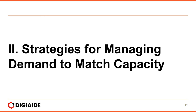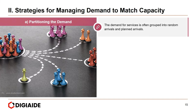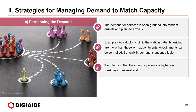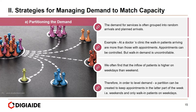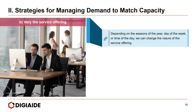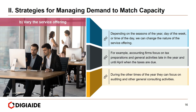Now, strategies for managing demand to match capacity. First, partition the demand: demand for services is often grouped into random arrivals and planned arrivals. For example, at a doctor's clinic, walk-in patients are more numerous than appointment patients — appointments can be controlled but walk-in demand is uncontrollable. Since patient inflow is higher on weekdays, a partition can be created to keep appointments in the latter part of the week and only walk-in patients on weekdays. Second, vary the service offering: depending on the season, day of the week, or time of day, change the nature of the service offering. For example, accounting firms focus on tax preparation late in the year until April when taxes are due, and during other times focus on auditing and general counseling.